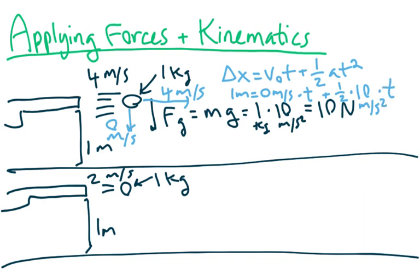We have this set up, and we can cross out the v-zero term because zero times anything is zero. So we have one equals one-half times ten times t-squared, which gives us one equals five t-squared. Checking the units, they cancel out, so t is in seconds. Therefore t equals one-fifth of a second.